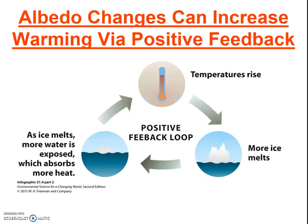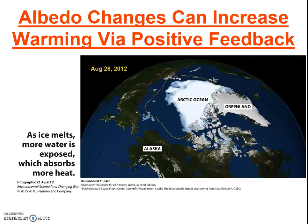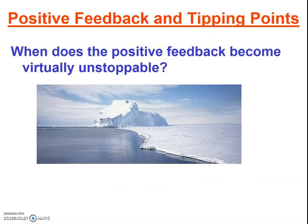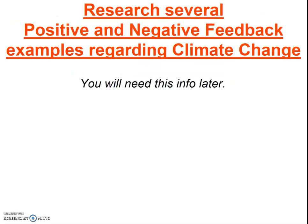Positive feedback similarly occurs on land: as Greenland's ice sheet melts, there's more dark land exposed, which absorbs more radiation and heats up, which melts more ice, which exposes more land, and so on. At some point, a positive feedback loop can become virtually unstoppable. Scientists fear this with the melting of glacial ice and with the release of carbon dioxide as the permafrost melts in the Arctic. I encourage you to research several negative and positive feedback loops related to climate change, as it's one of the learning objectives for this topic.